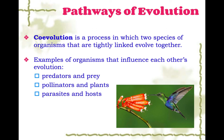So that's how speciation occurs — remember, this is macroevolution, so we're talking on a bigger scale, forming whole new species. Populations need to become reproductively isolated in various different ways in order to create a new species.